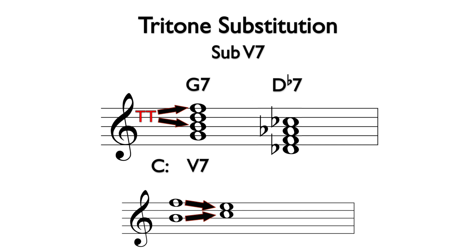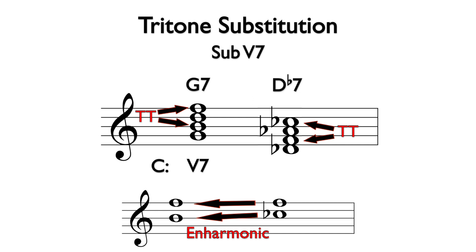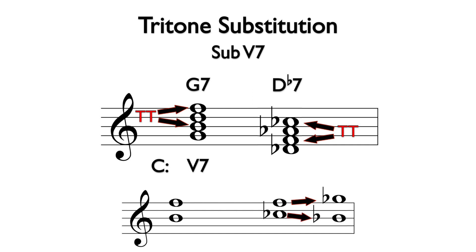The Db7 chord contains the equivalent notes of Cb — which is enharmonic to B — and F. Typically, the F in a Db7 chord would lead to Gb and the Cb would lead to Bb, resulting in a down-a-fifth resolution of Db7 to Gb, the one chord in Gb.